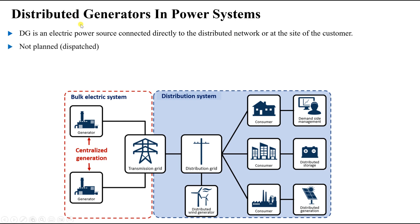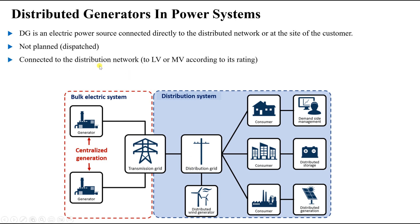This type of distributed generator is not planned — when we design our electrical grid, we don't plan for distributed generators. It can be anyone with a PV system or a grid-connected system that gives electrical power back to the grid. It can be connected to a low voltage or medium voltage level of the distribution system depending on its power rating. Usually, distributed generators are in the range between 50 to 300 MW.